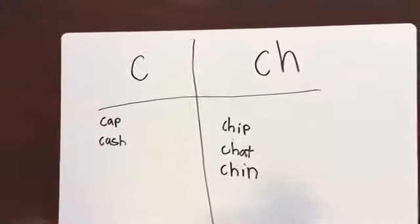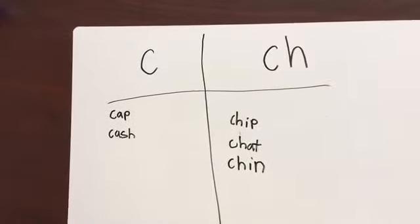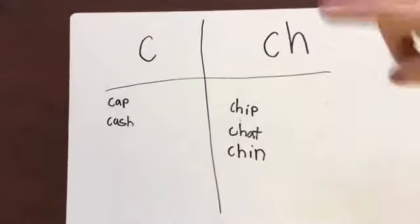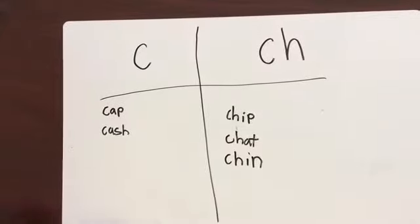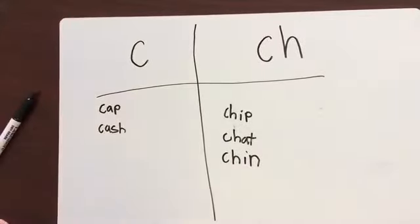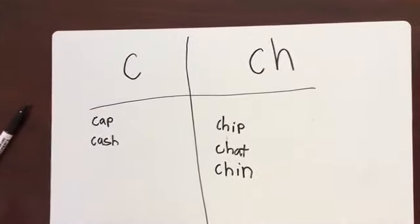Read all your C words. Cap. Cash. Now read your CH words. Chip. Chat. Chin. Good work. These were analogy charts.